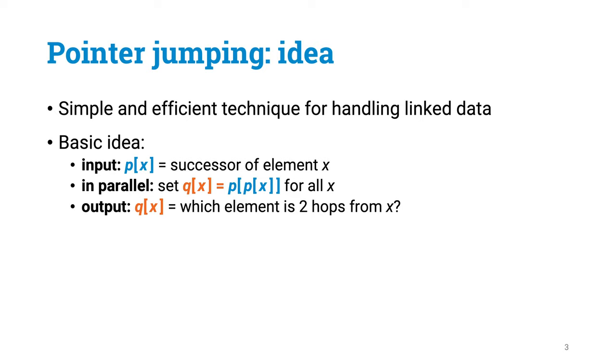The technique is called pointer jumping. And the whole idea is basically just this one line. That's pretty much all that there is to it. Let me try to explain it more carefully. We are given some array p, where p[x] tells who is the successor of x. And we compute here a new array q.